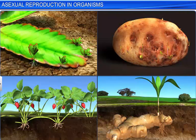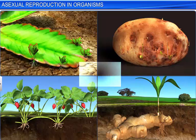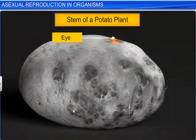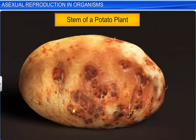In higher plants, asexual reproduction, commonly known as vegetative propagation, takes place through vegetative propagules — specialized structures which emerge from different parts of the plant. For instance, the stem of a potato plant is dotted with buds known as eyes, which later germinate into new plants.